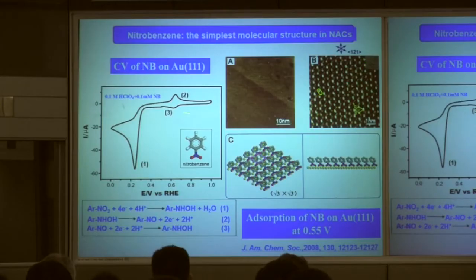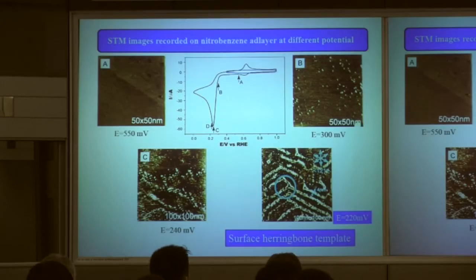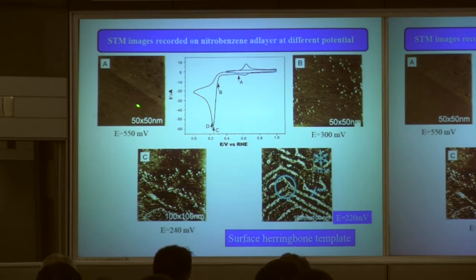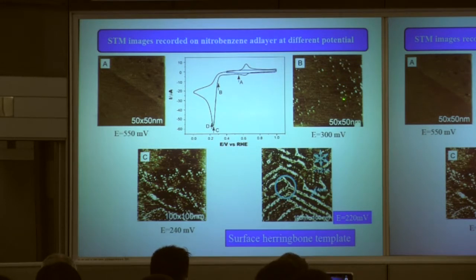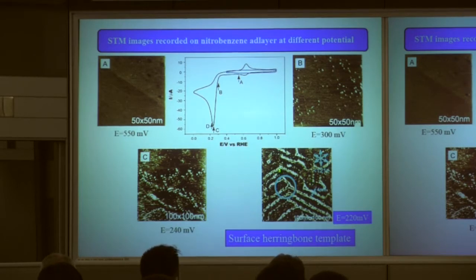We obtained this STM image at potential near the double-layer potential region. After getting this stable layer structure, we scanned the potential from A to B, C, D, and back to A. Here is a series of STM images corresponding to potential changes. At A, you see the well-defined structure. At B, a lot of molecular clusters appear. At C and D, you can find molecular nanowires on the surface.